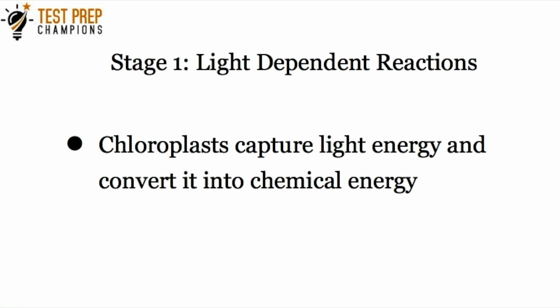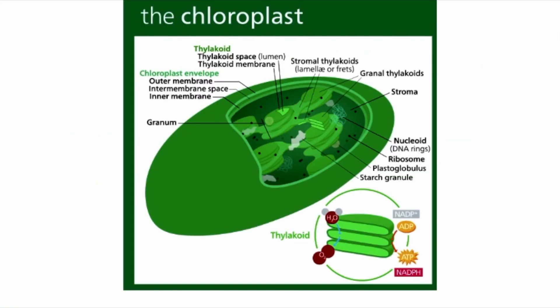The first thing that happens in stage one is that chloroplasts capture light energy and convert it into chemical energy. You're probably wondering what exactly a chloroplast is — let me show you. This big, complex-looking thing shown here is a picture of a chloroplast.